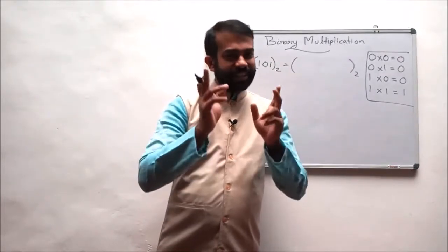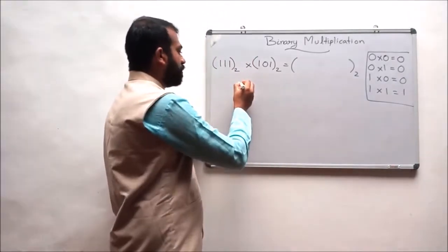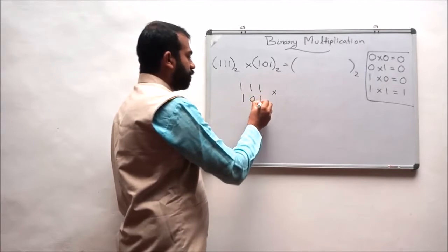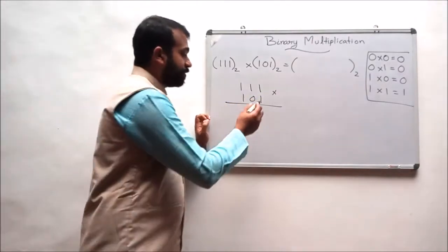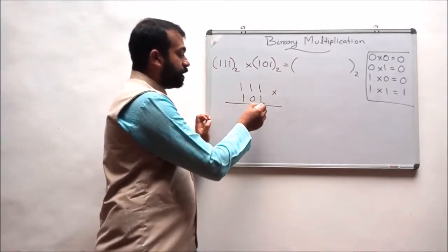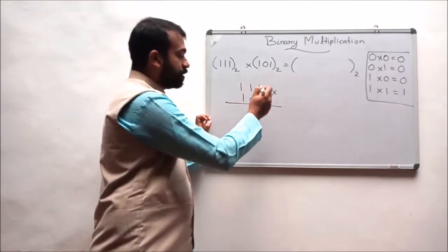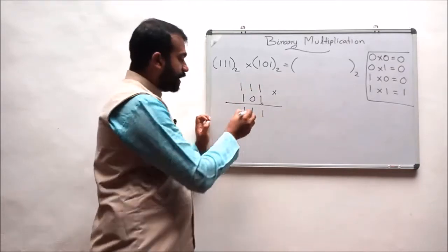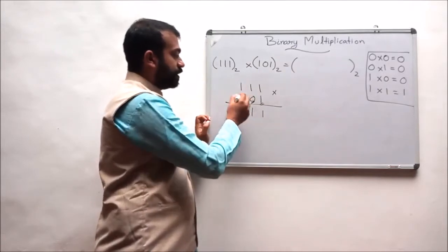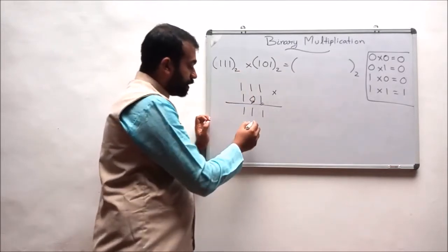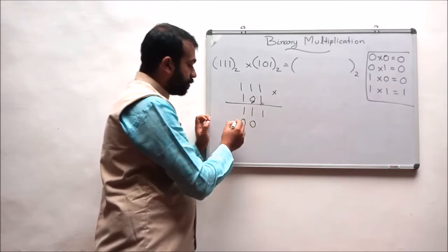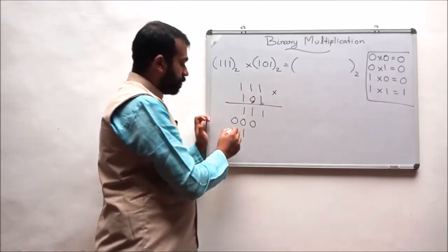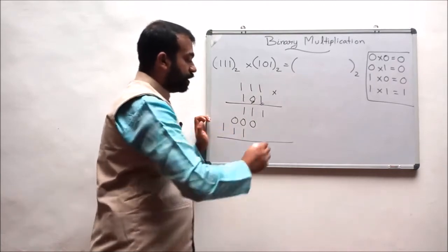Our first example is: multiply 111 with 101. First, 1 is multiplied with 111, which will result in 111. Secondly, 0 is multiplied with 111, which will result in 000. And finally, 1 is multiplied with 111, which will result in 111.